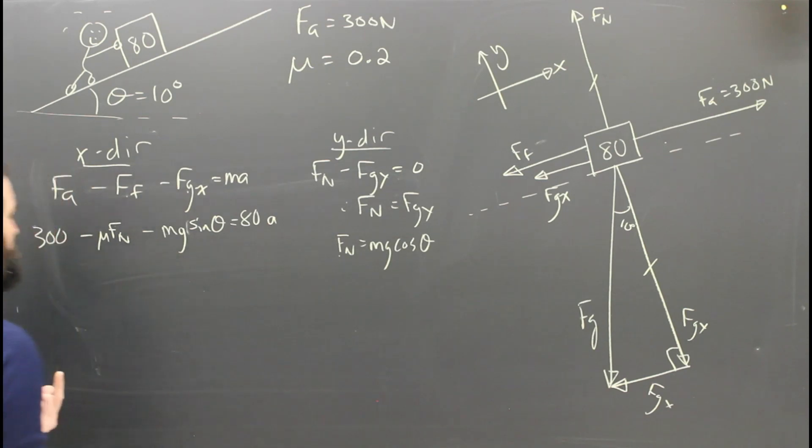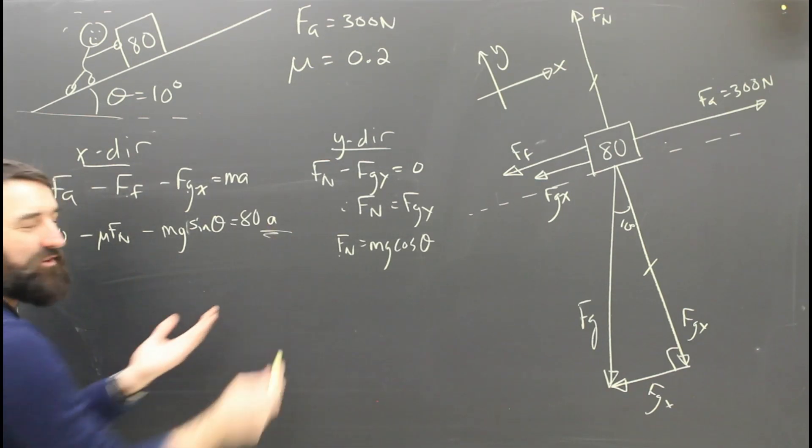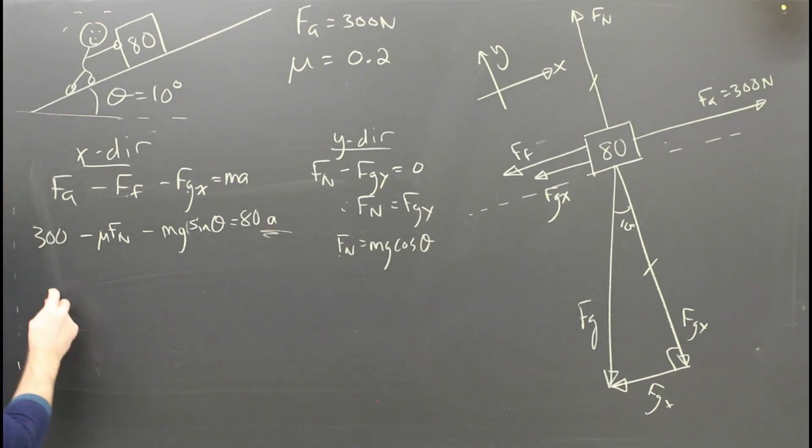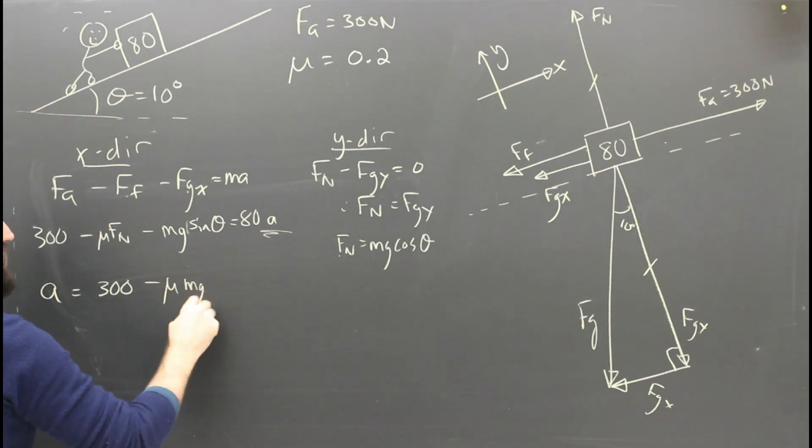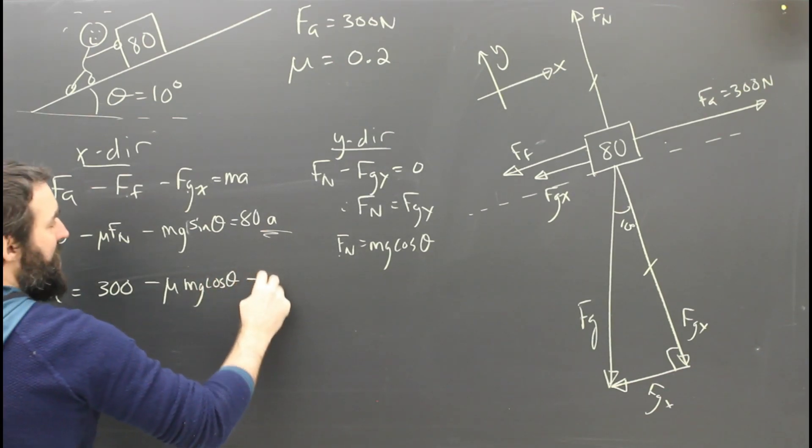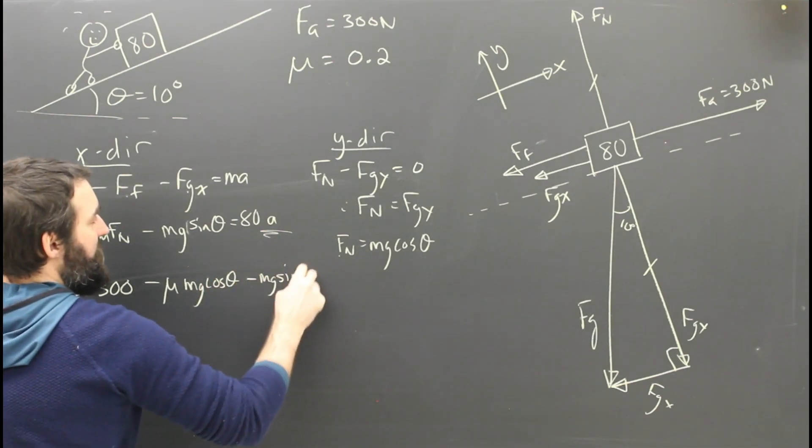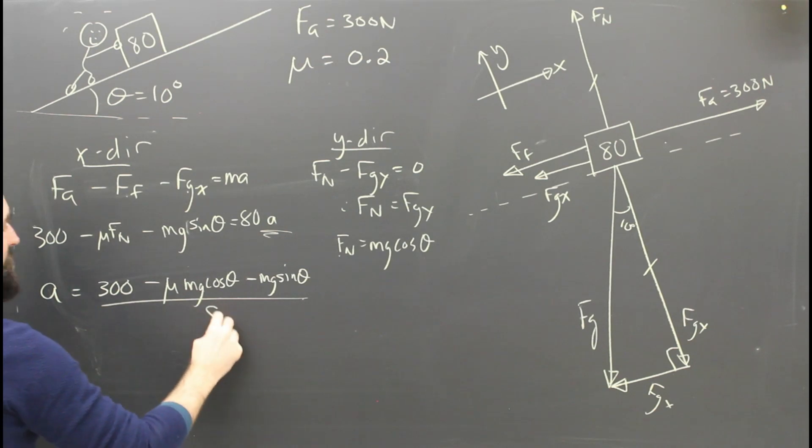I know what FN is. It's mg cos theta. The question is find the acceleration. What's the acceleration? The acceleration is 300 minus mu times mg cos theta minus mg sine theta, all divided by 80.